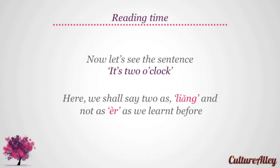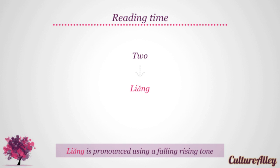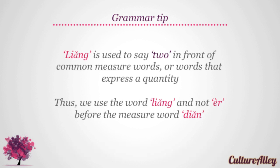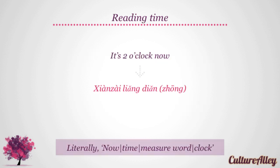Now let's take the sentence 'it's two o'clock'. Here we shall say two as liang and not as er as we learned before. Two translates to liang, which is pronounced using a falling-rising tone. Liang is used to say two in front of common measure words or words that express a quantity. Thus we use liang and not er before the measure word dien. It's two o'clock now translates as xiàn zài liǎng dien zhōng.